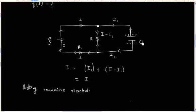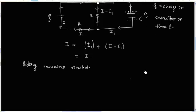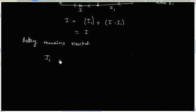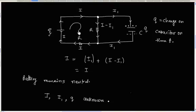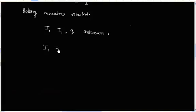At any time T, let the capacitor have a charge of Q. We have three unknowns: I, I1, and charge Q. So we need three equations to solve these unknowns. We can write one equation for the outer loop, another for the inner loop, and the third equation is I1 equals dQ by dt.